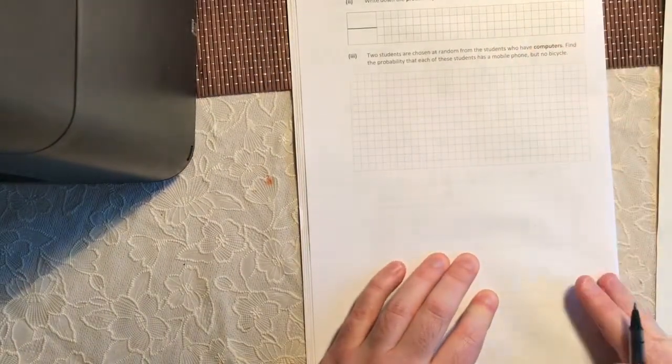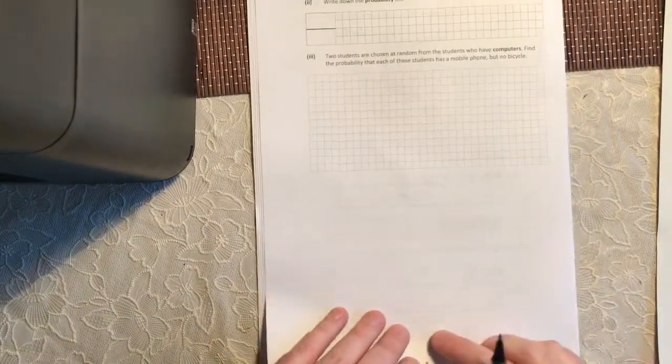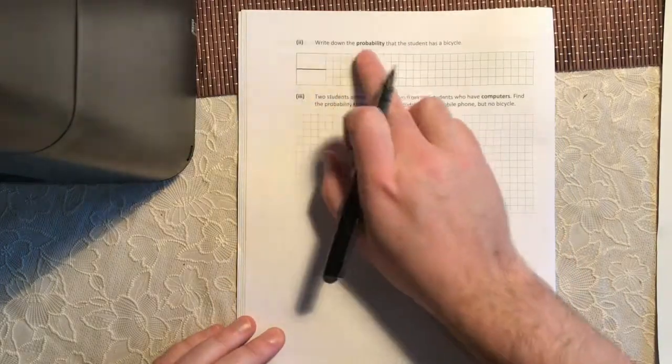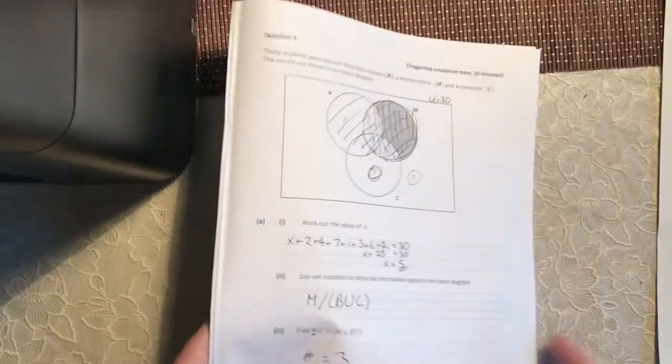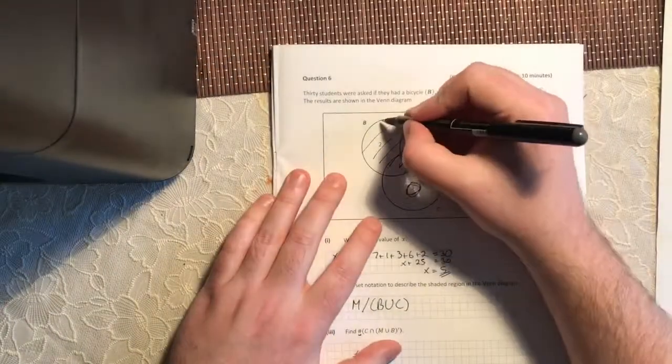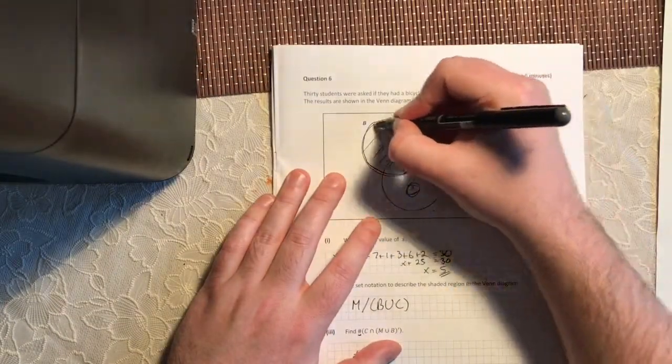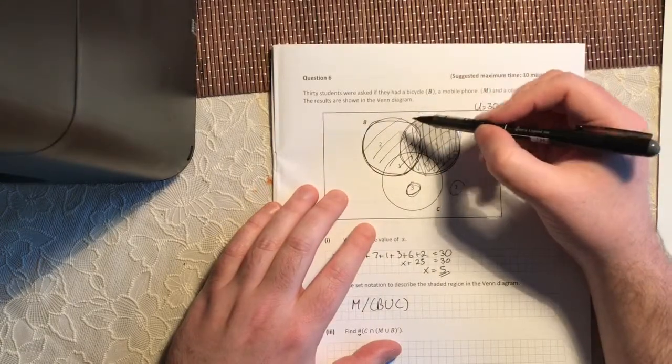Write down the probability that the student has a bicycle. Okay. So I'm going to have to go back here. So the student has a bicycle—is everyone inside this. Now this is getting a bit messy, so apologies about that.